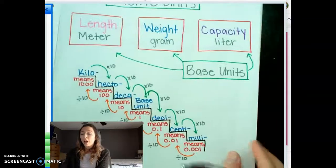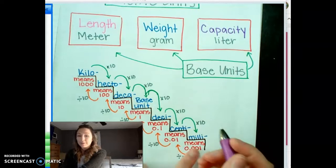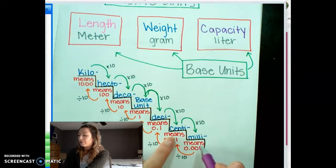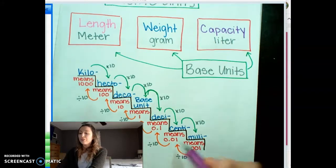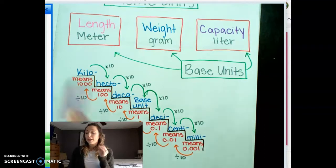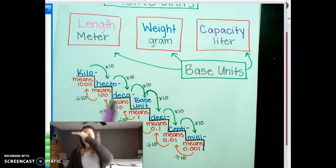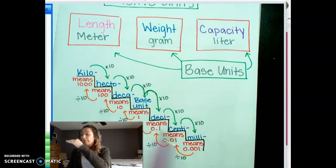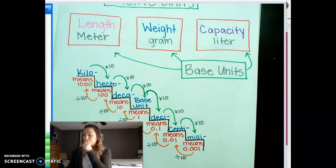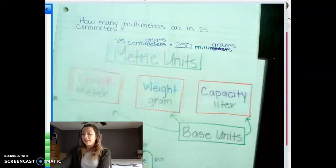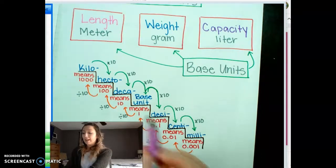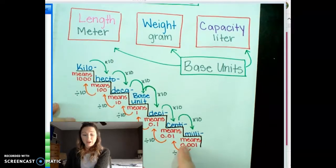If we started with 250 milligrams and wanted to know how many centigrams, we would divide by 10 because we're going the opposite way. Think of it like walking up or down steps — kilo is at the top. Walking down the steps means you multiply by 10; starting at the bottom and going up means you divide by 10. Always find your prefix on the stairs and determine which direction you're going.